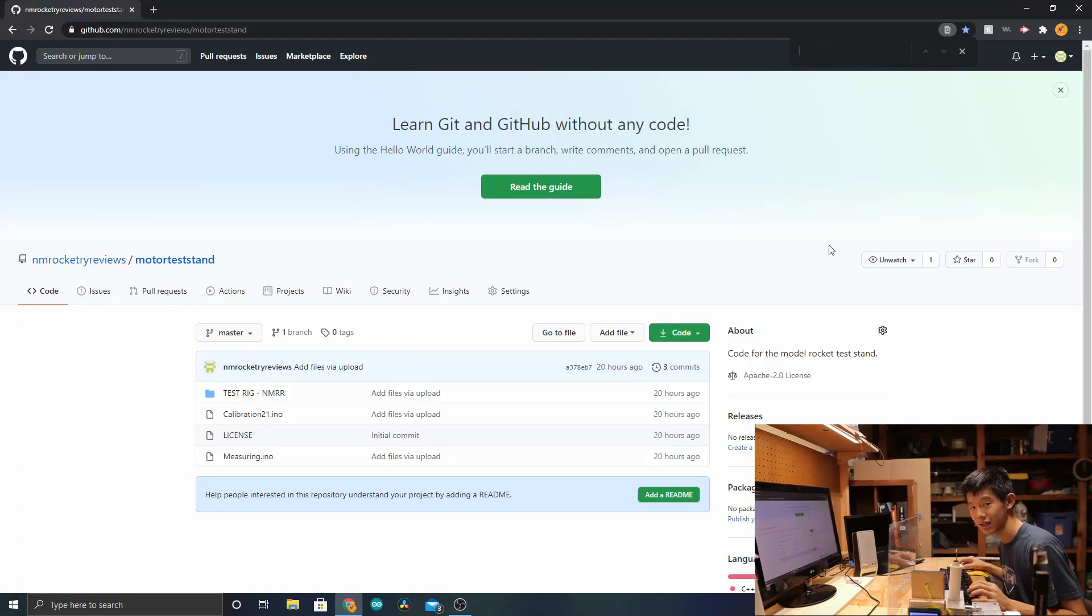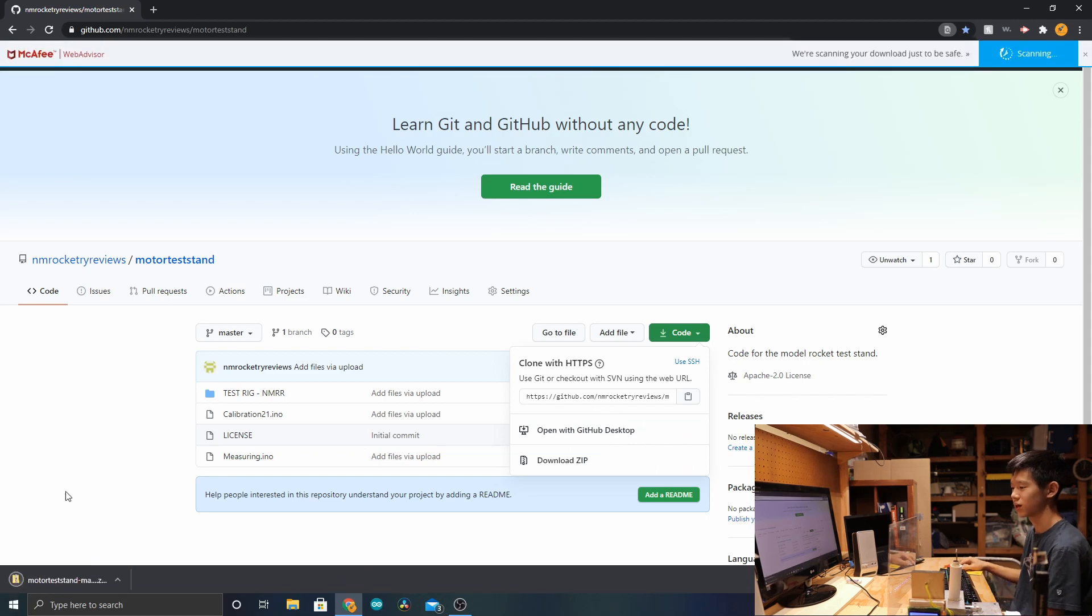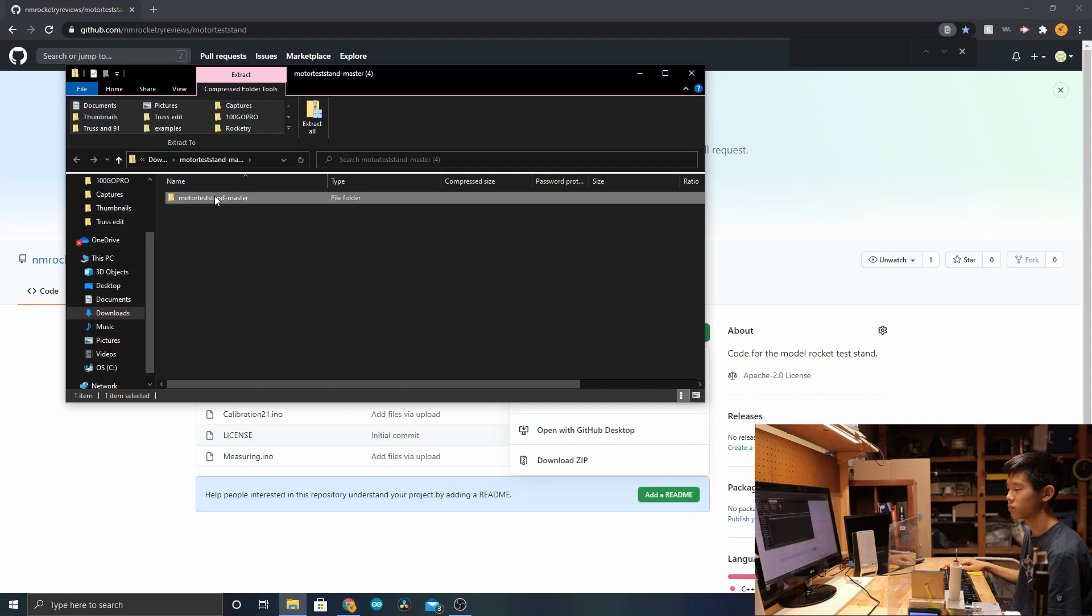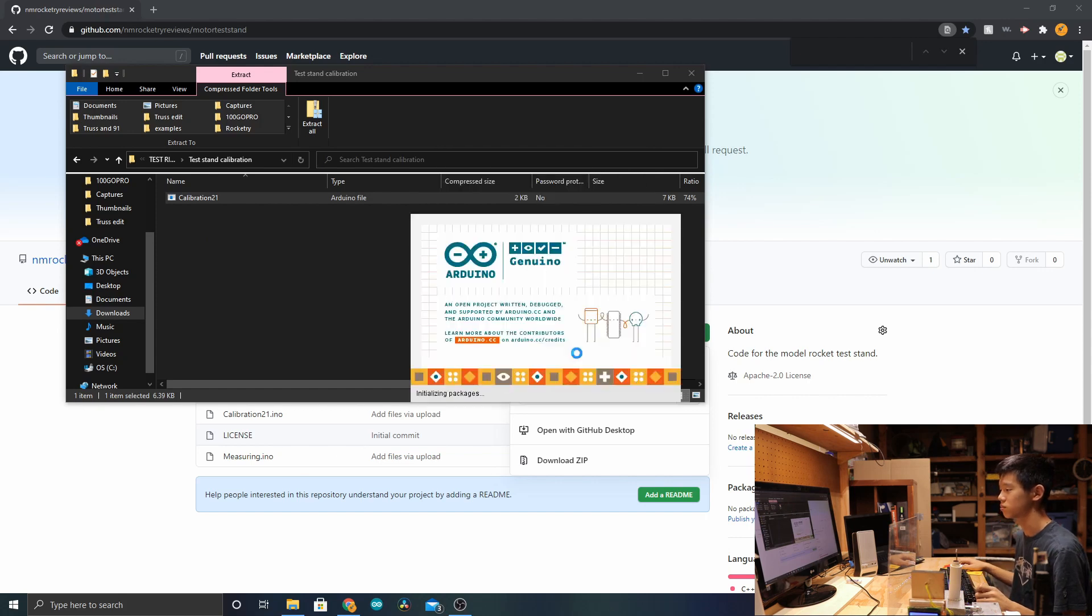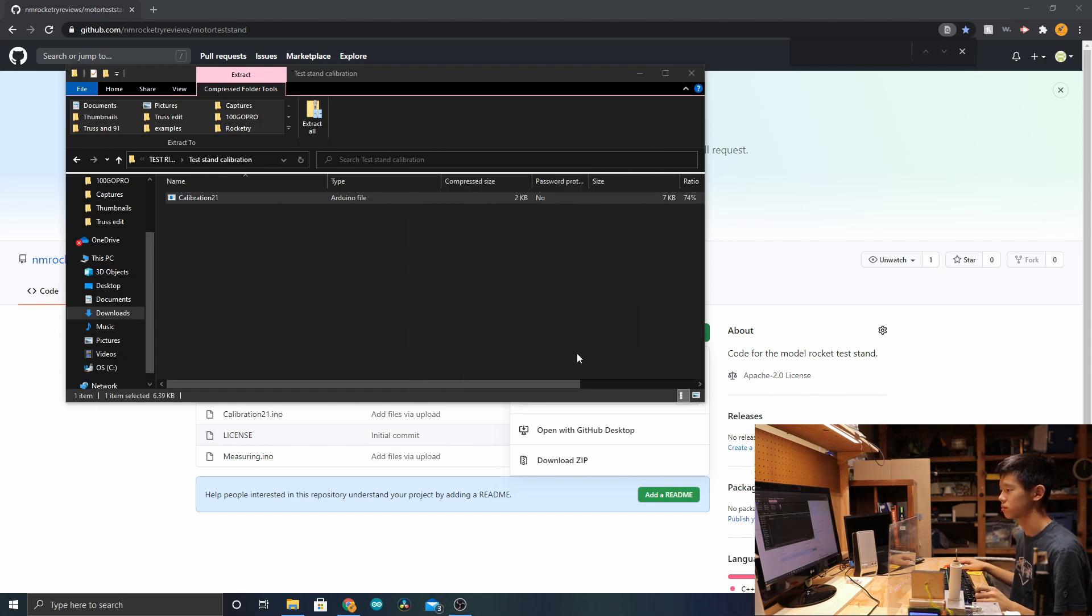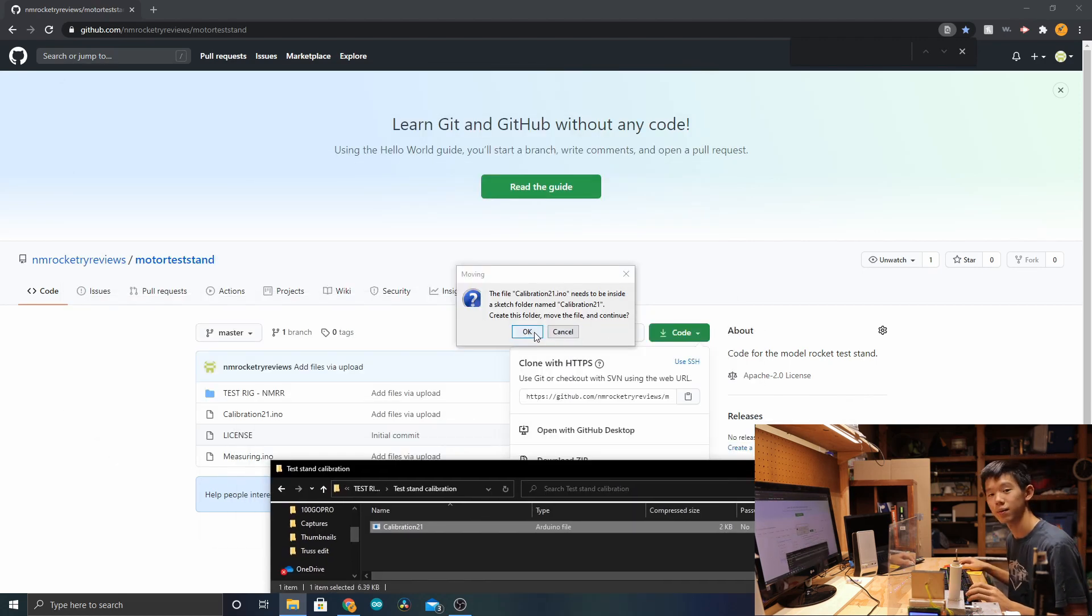Down in the description, there is a GitHub link so you can download the code for this test stand. Go to that link as shown right here and press code and press download zip. Now open that file, open the folder, open test rig NMRR, and then open test stand calibration. Now open this with Arduino IDE. You should have that downloaded already. Now it's going to ask you to make a new folder. Just go ahead and press OK.